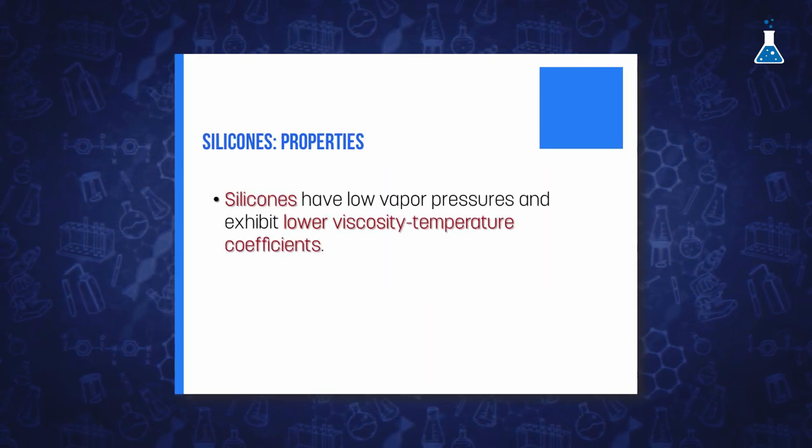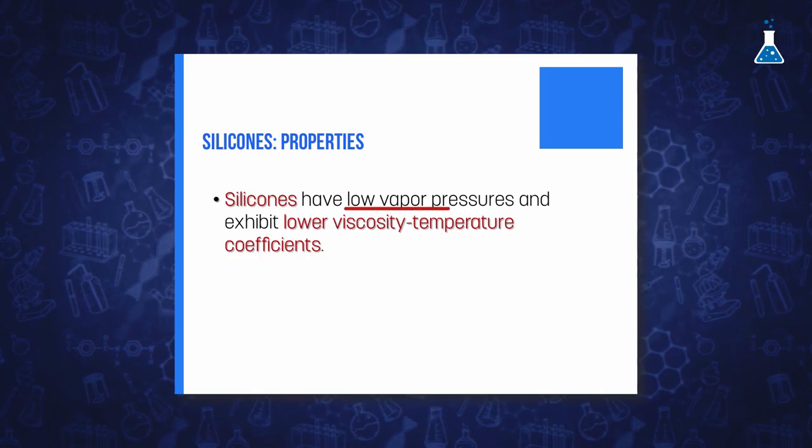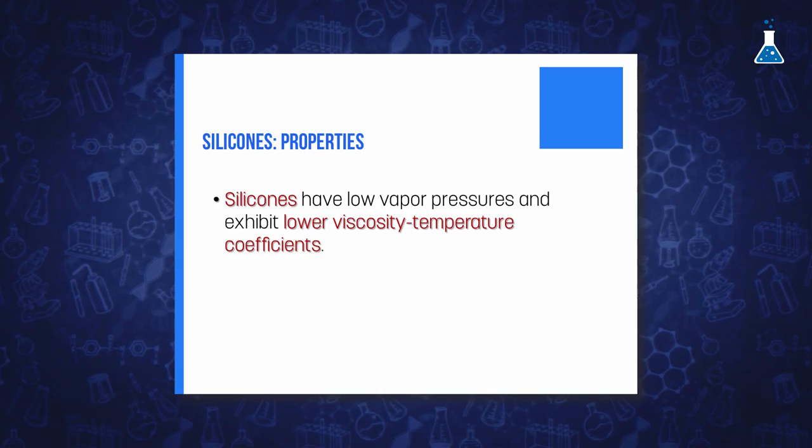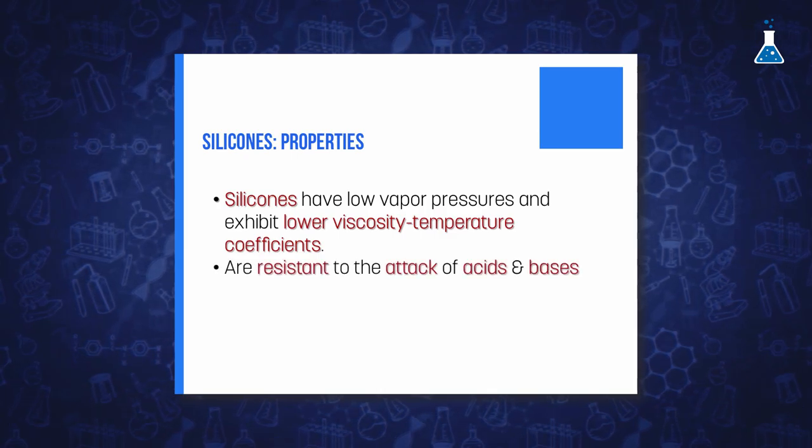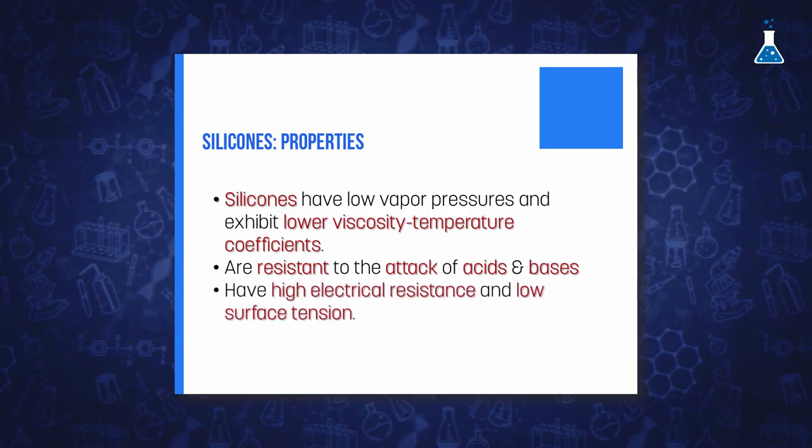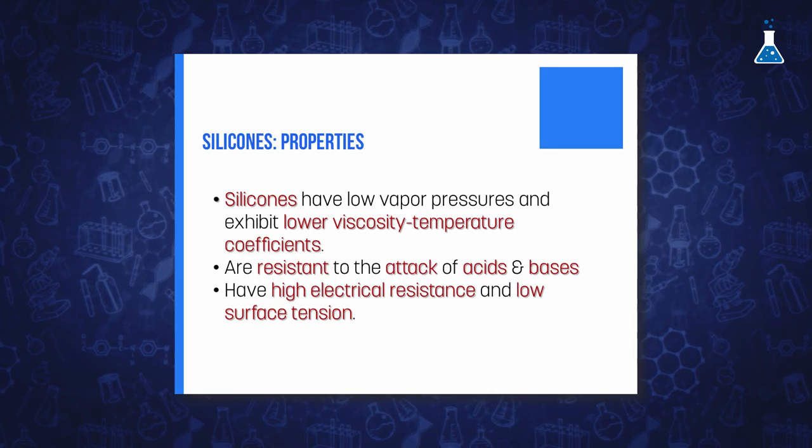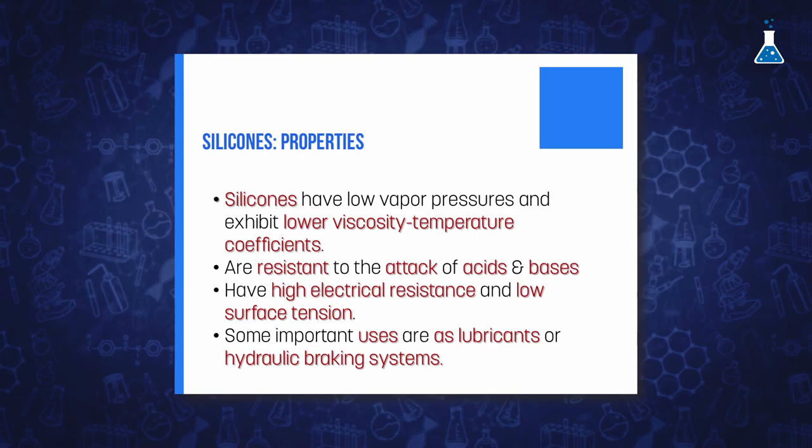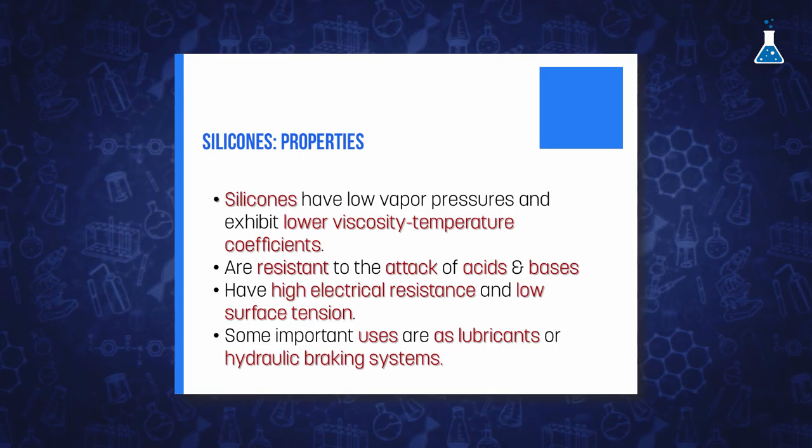These silicone oils are characterized by low vapor pressure and low temperature coefficient of viscosity, are resistant to the attack of acids and bases, have high electrical resistance, and also have low surface tension. Silicone oils find unusual applications as lubricants and in hydraulic braking systems, considering they experience a low variation in viscosity with temperature, in contrast with the dramatic change that usually happens with hydrocarbon oils.